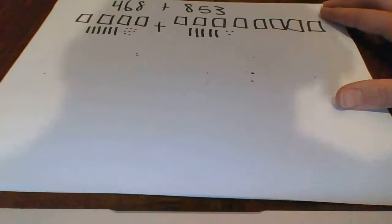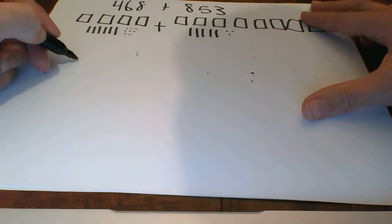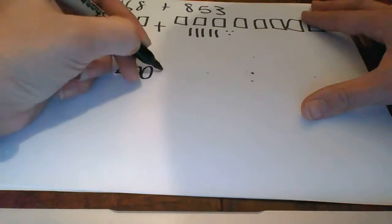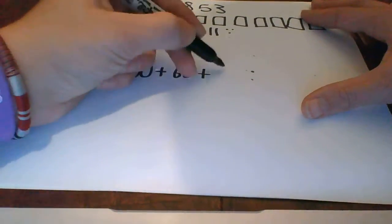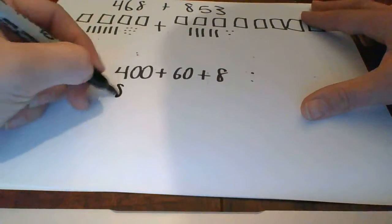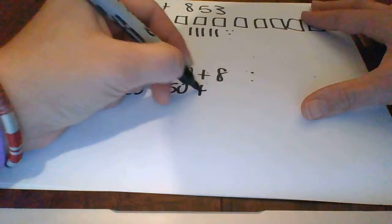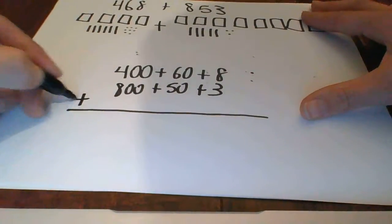I'm also going to put these in expanded notation so you guys can see the difference here and what I'm going to do is I'm actually going to put it on top of each other: 400, 60, and 8, and then below it 800 plus 50 plus 3. And so I'm going to do this together.